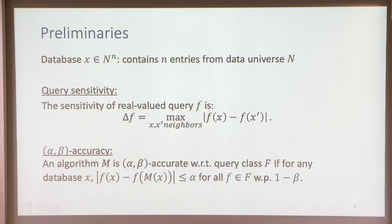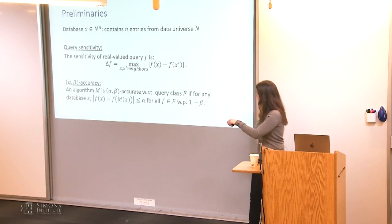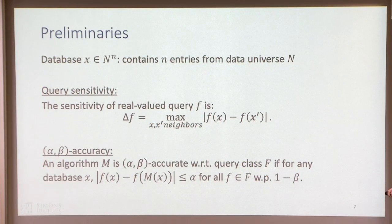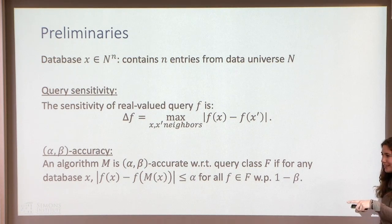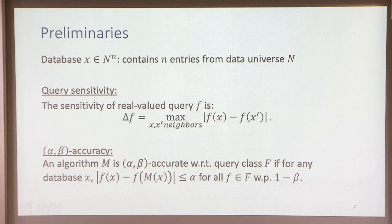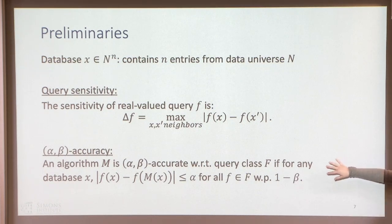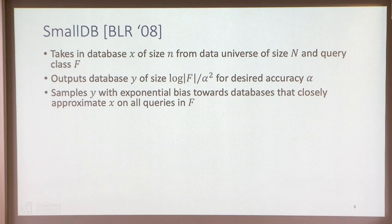Is the guarantee simultaneous for all F, or for every fixed F? This must hold simultaneously for all F, with probability one minus beta. So this is a property of a particular algorithm M: given some M, I'll give you back some alpha and beta for that particular M — it's a property of the algorithm, not of the problem.